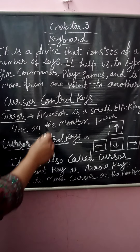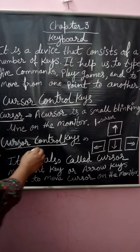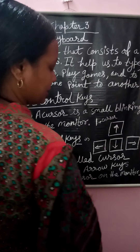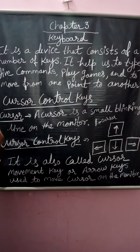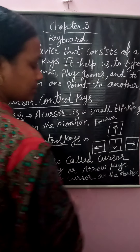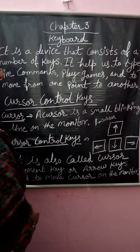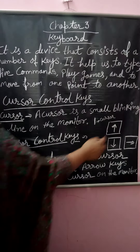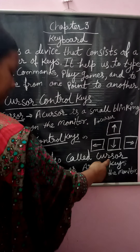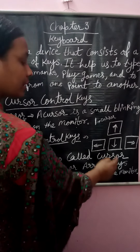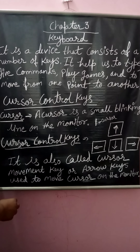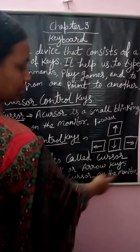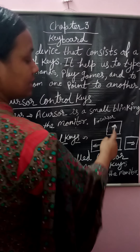Now for the cursor control key — all of you have seen the keyboard. There are four arrow keys on it, and these are also called cursor control keys or arrow keys or cursor movement keys. These four arrow keys are used to move the cursor on the monitor — that blinking line can be moved with the help of these arrow keys.